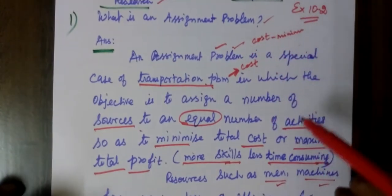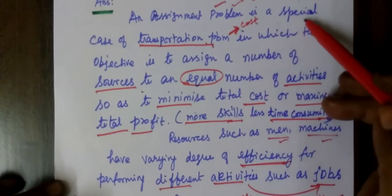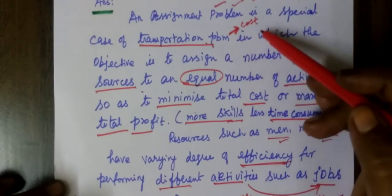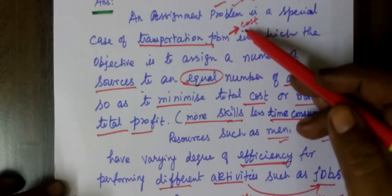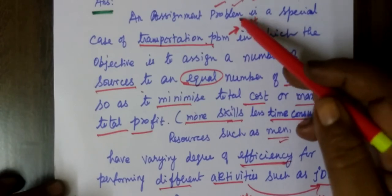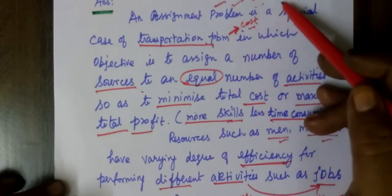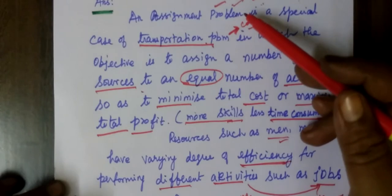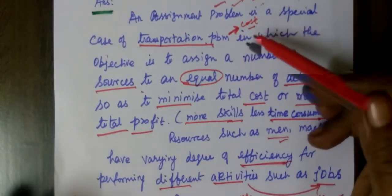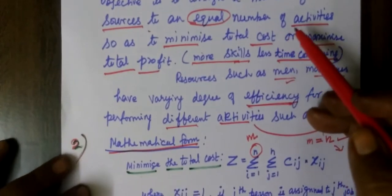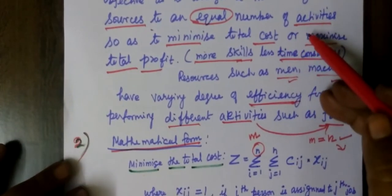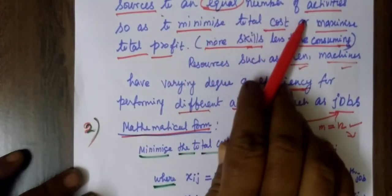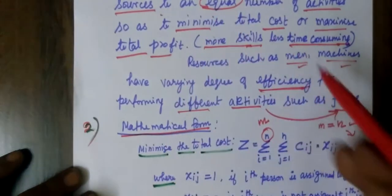What is an assignment problem? Assignment problem is a special case. This is the next level of transportation problem. In transportation problem we are finding the cost. Assignment problem is better than transportation problem. The objective is minimizing the cost. In the assignment problem, the number of sources and number of activities is equal — that means rows equal to columns.